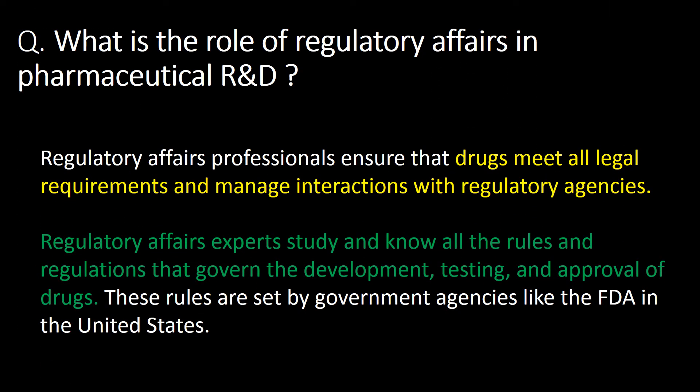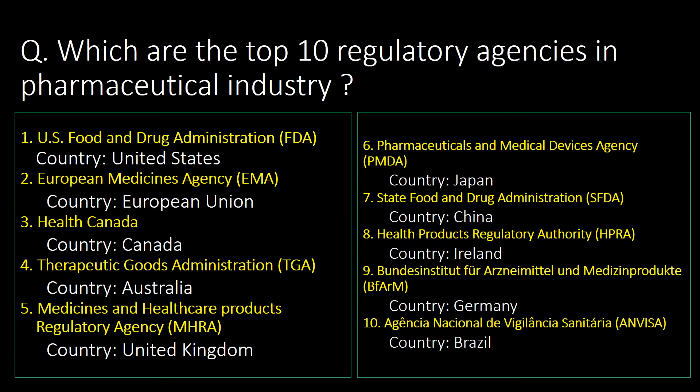The second important question is: what is the role of regulatory affairs in pharmaceutical R&D? Regulatory affairs professionals ensure that drugs meet all the legal requirements and manage interactions with regulatory agencies. Regulatory affairs experts study and know all the rules and regulations that govern the development, testing, and approval of drugs. These rules are set by government agencies like the FDA in the United States. The top 10 regulatory agencies along with their country names are mentioned here, including FDA, EMA, TGA, ANVISA, and many more. You can pause this presentation and note down this information for your further use.